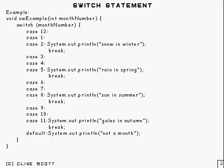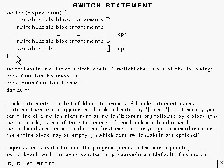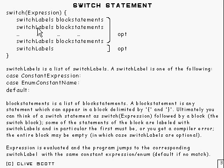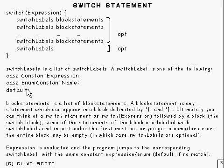Now, this is the syntax of a switch statement. You've got an expression here in general, rather than a variable, and it's basically just a big block of statements, some of which have got labels — possibly more than one label. The labels fall into two categories: they've either got a constant expression, or something called an enum constant name, which I'll describe later. Default is also a possibility, and that can go with either category.